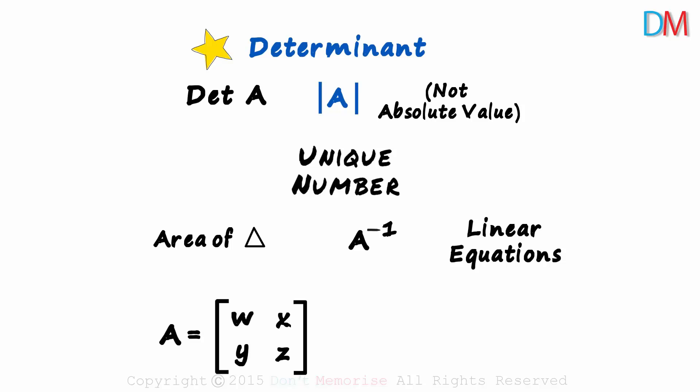If we have a matrix A, its determinant is written like this. The elements will be written between the two vertical bars.